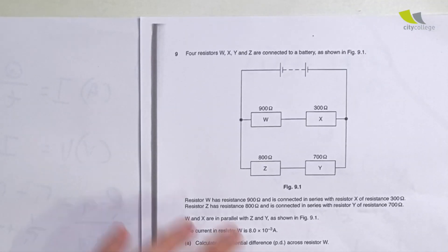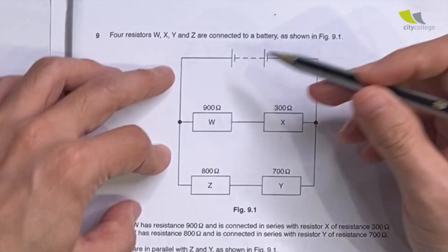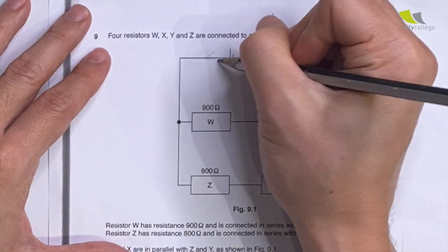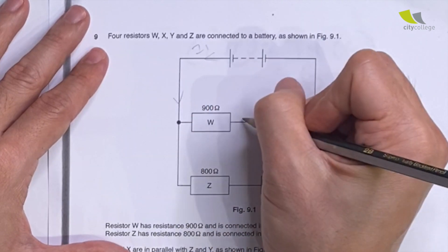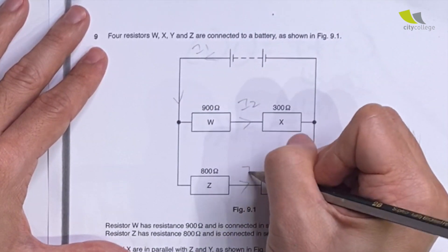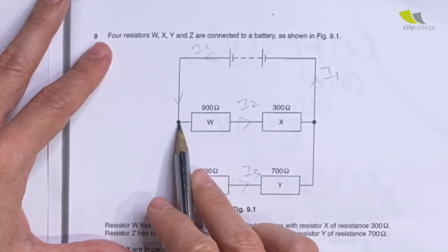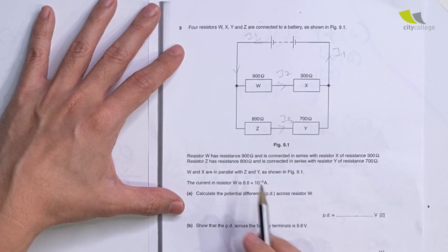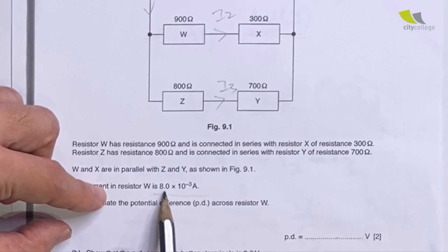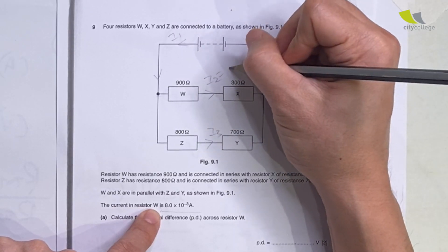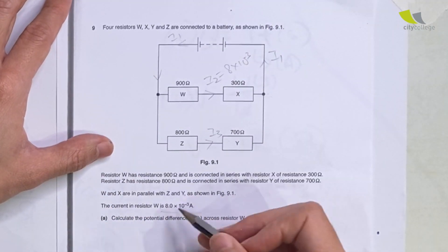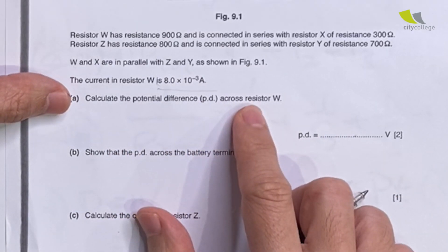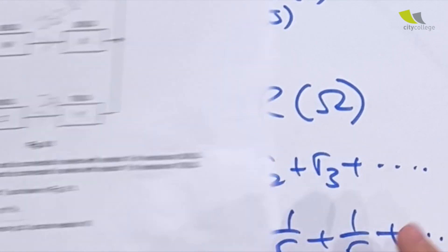Again, I'll write out my currents: I1 splits into I2 and I3, then comes back to I1. I2 is the same current that goes through W and X; I3 is the same current that goes through Z and Y. Resistance values are all given. Current through W is 8 × 10⁻³ A, so I2 = 8 × 10⁻³. I always write out what's in the diagram so it's easier to see. Now calculate the potential difference across resistor W — they are testing if you can apply Ohm's law.